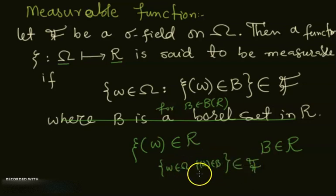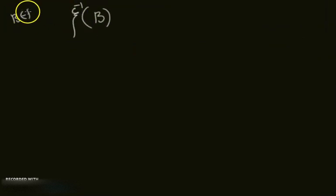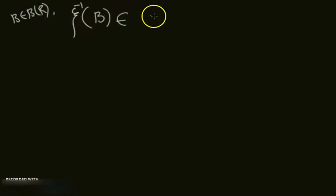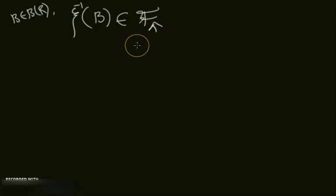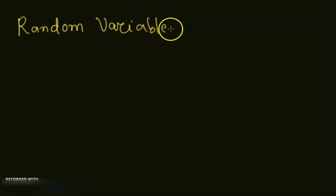So what you do is: if you pick any Borel set from R, you need to check that the set of omega from the sample space such that x_i of omega is in B belongs to the sigma field. If this is the case, we say that x_i is measurable. Equivalently, the inverse image of B for every B from the Borel sets of R must be in the sigma field — i.e., these inverse images are measurable in this sigma field. Now, how do we define a random variable?